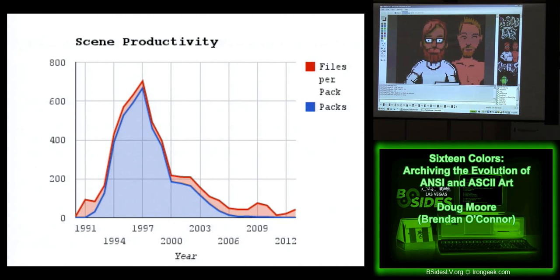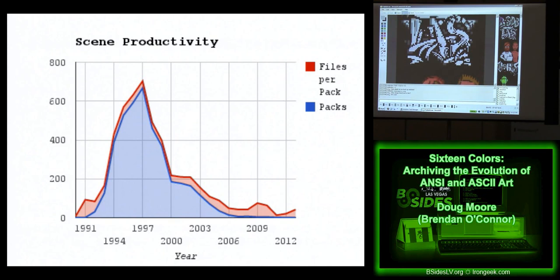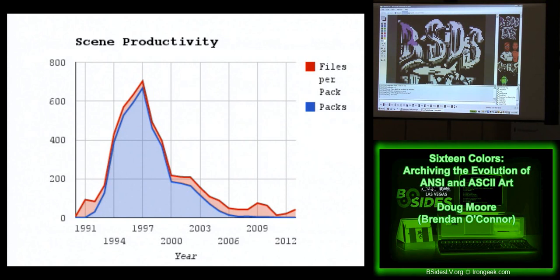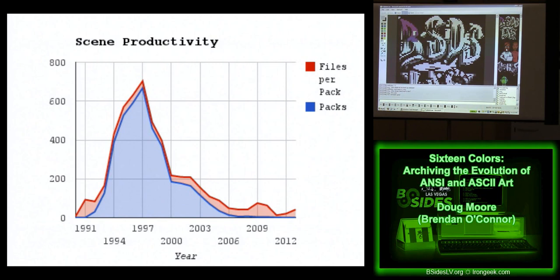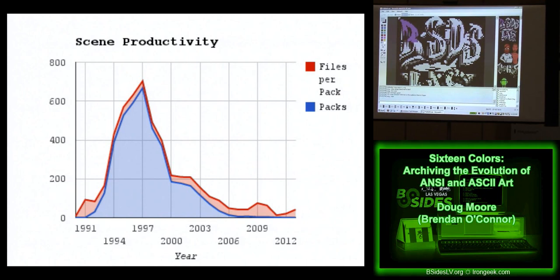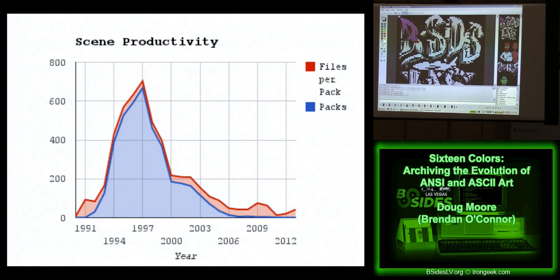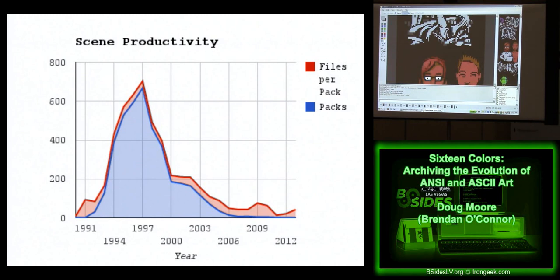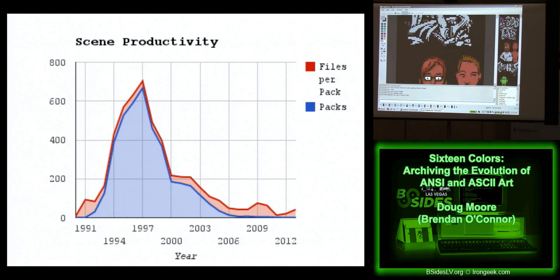What happens in that time is that the competitiveness starts to disappear and we start to see a lot more collaboration — what are referred to as joints, ANSIs created by more than one artist. Someone would start an outline, transfer the file to another artist, he'd do a little work, and they'd go back and forth until they had a final product. In the early 2000s, Curtis Wensley — otherwise known as Ido — released a Windows version of his editor, Pablo Draw, which introduced a client-server model. That's what we're seeing on this other screen. It really raised the collaboration level of ANSI art.